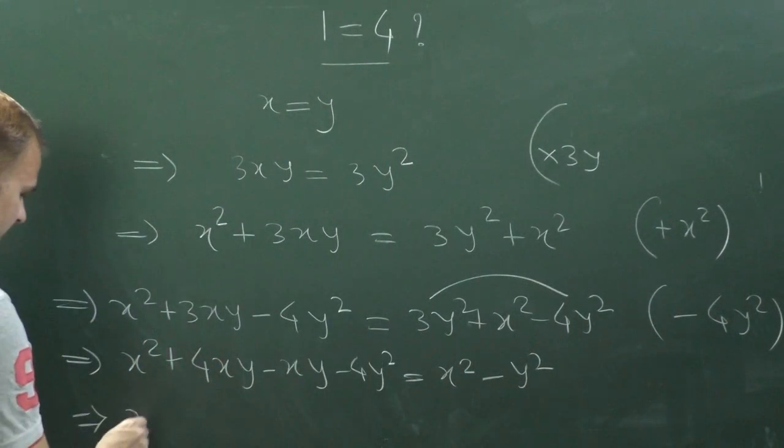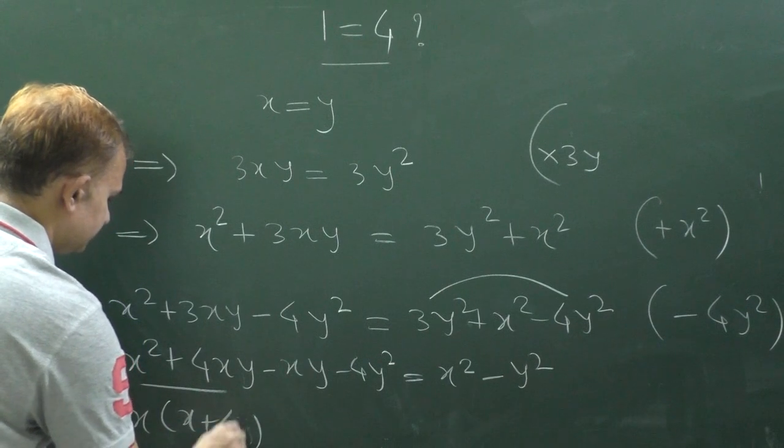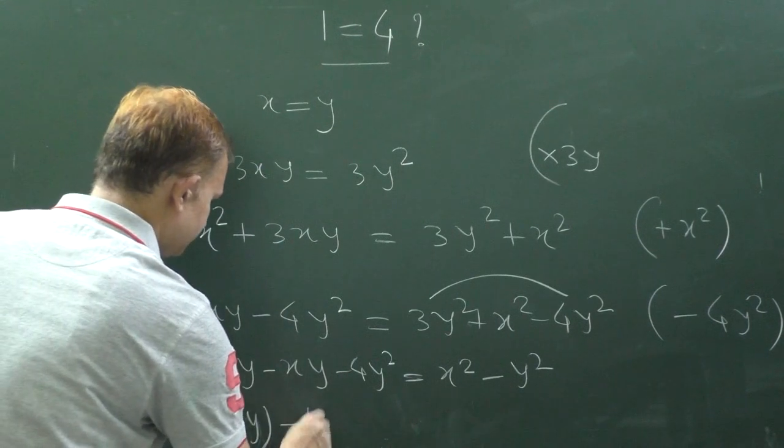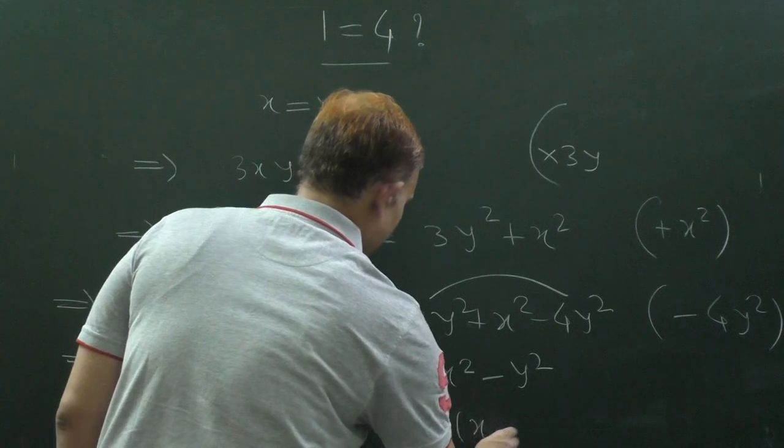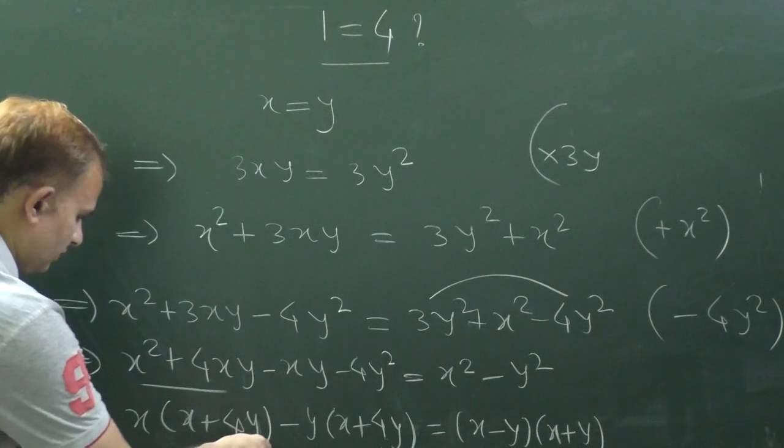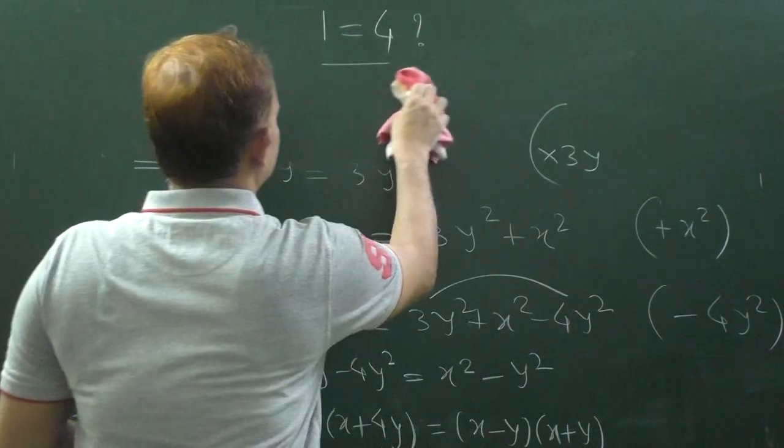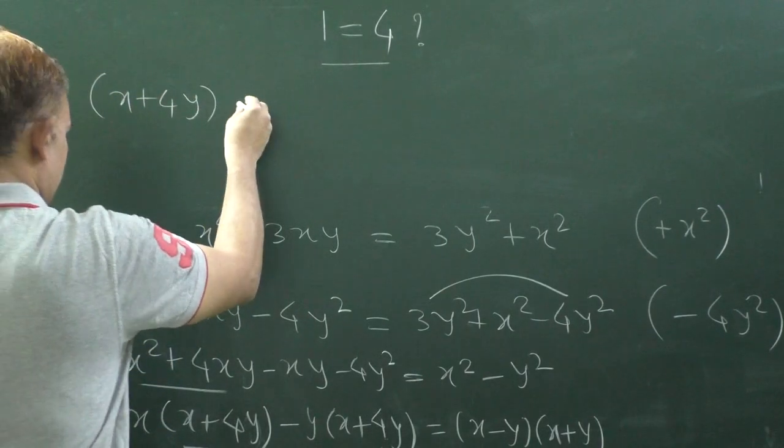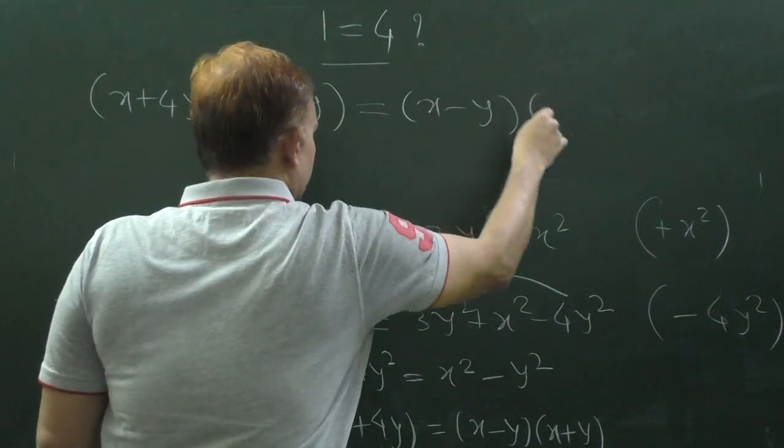Which implies X common from these two, X plus 4Y minus Y common. X plus 4Y common from both sides, from these two terms. X plus 4Y common, so X minus Y is there, is equal to X minus Y into X plus Y.